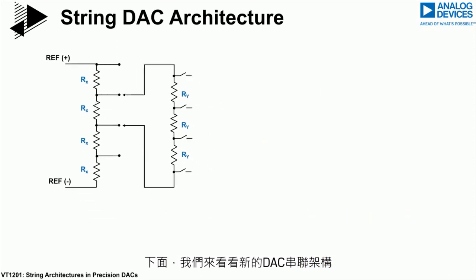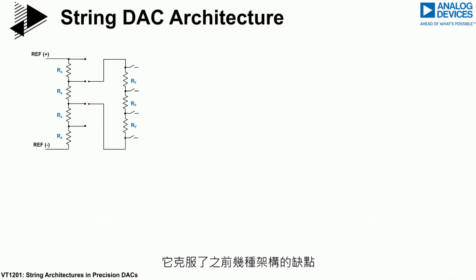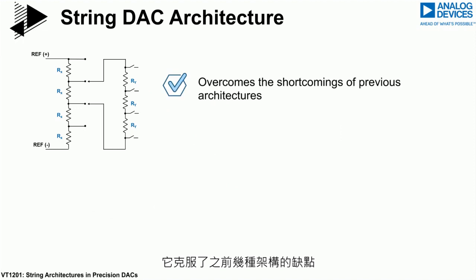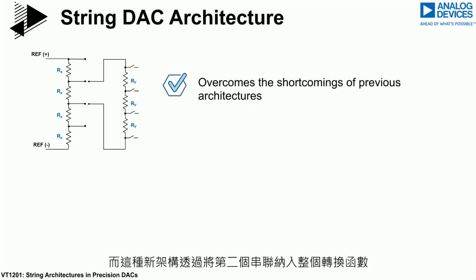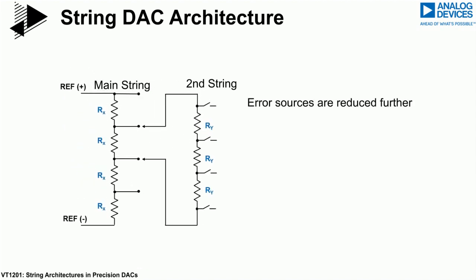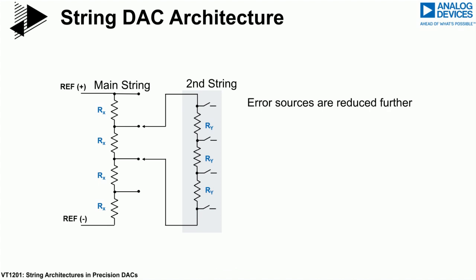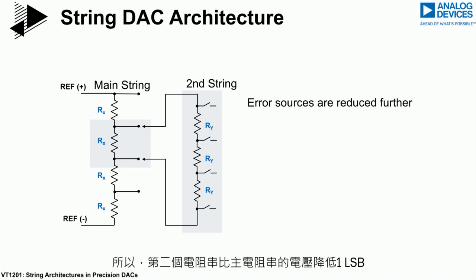If we now look at the new string architecture associated with DACs, this overcomes the shortcomings of the previous architectures, where the substring needed to be either buffered or had to be of a much higher impedance to remove loading effects. For this new architecture, the error sources are reduced further through the incorporation of the second string in the overall transfer function. This string appears in parallel with the resistor in the main string, leading to a voltage drop across that main string resistor by one LSB of the second string, which is exactly what is required.